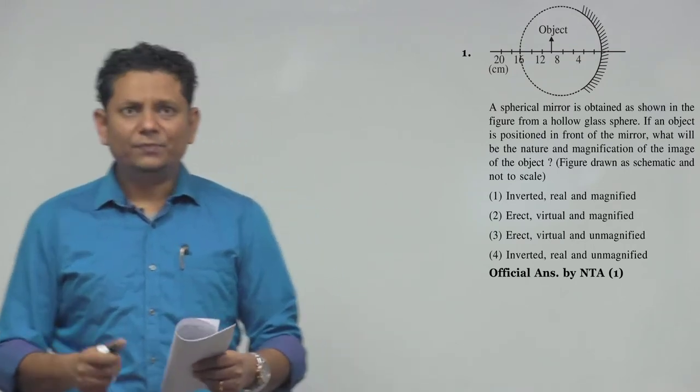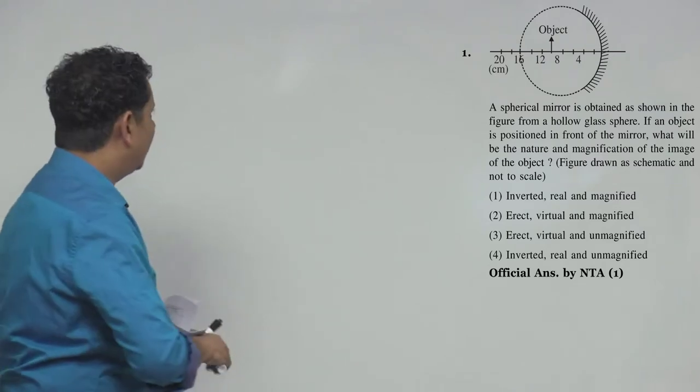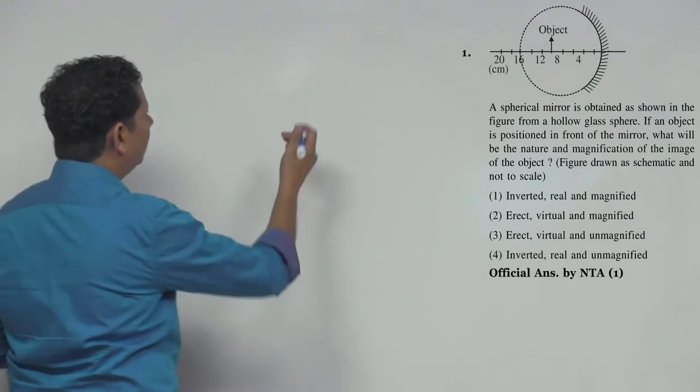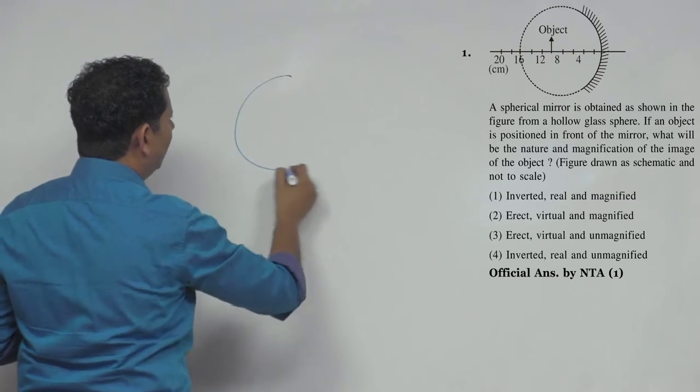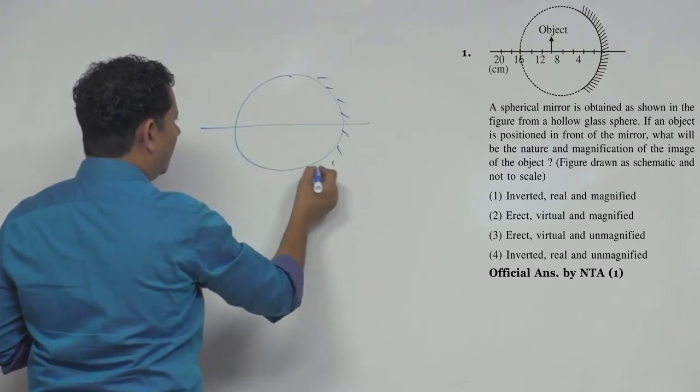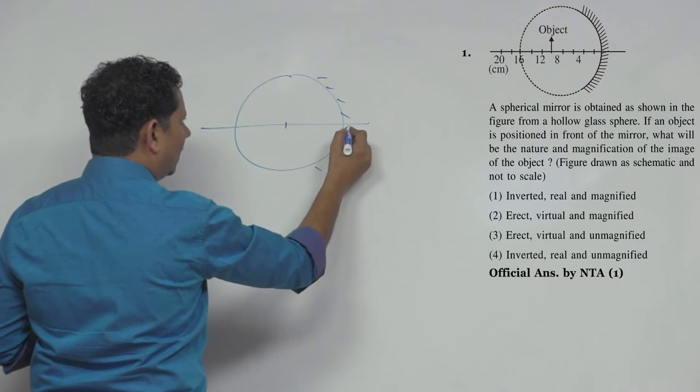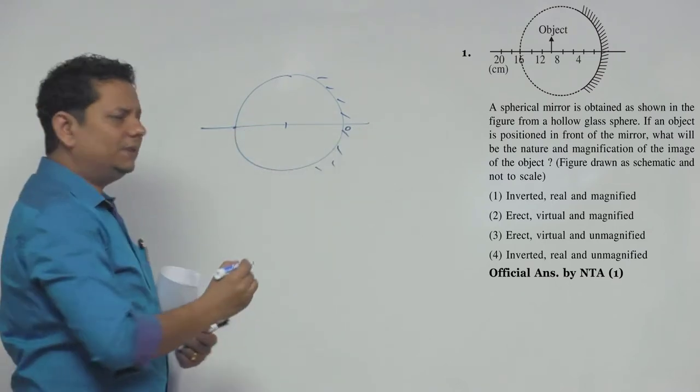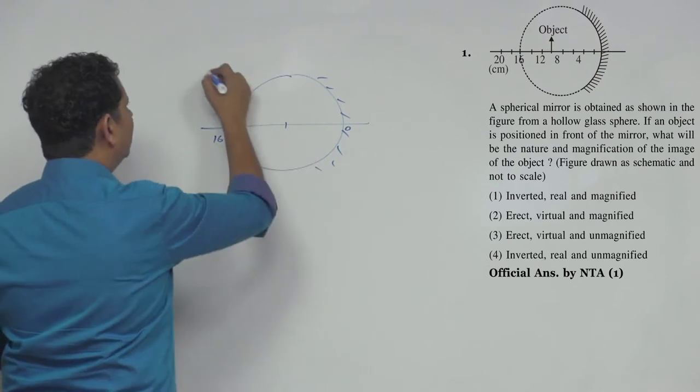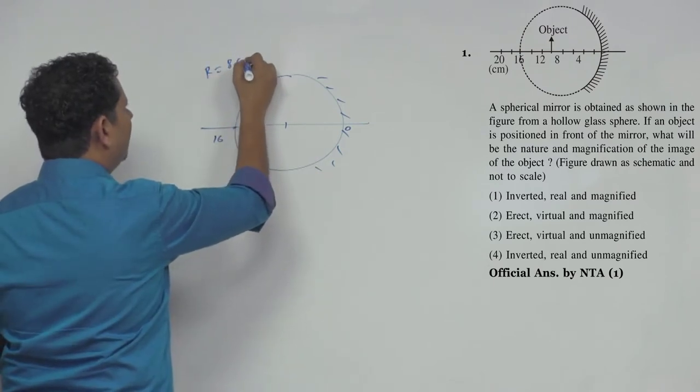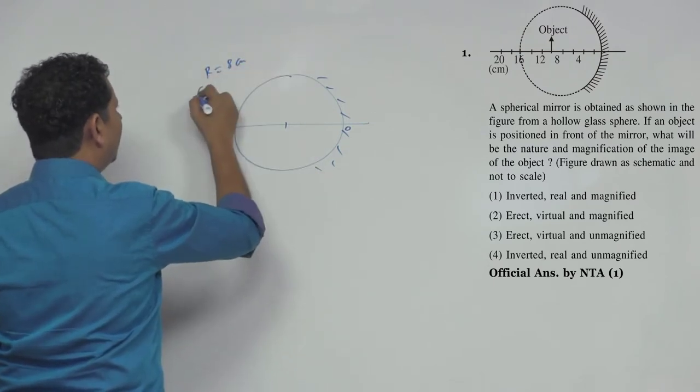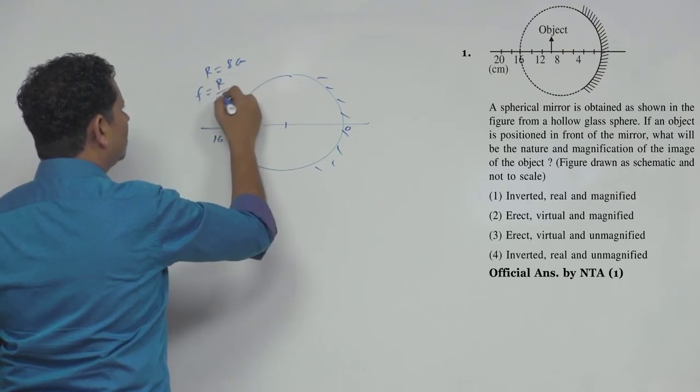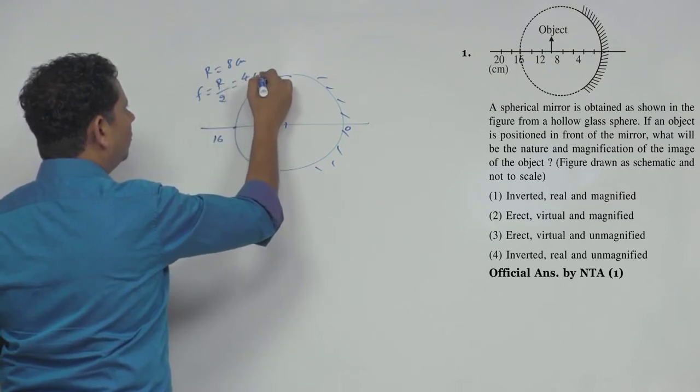Fair enough. So based on this, we can say radius will be 8 centimeters. Radius 8 centimeters, so the focus will be equal to r/2, that will be equal to 4 centimeters.